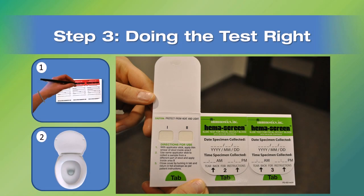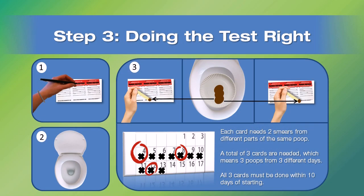Close the flap and put the card in the foil lined envelope and keep it at room temperature. Throw out the stick in the disposable container, flush the toilet, and you're done. The first of three samples.